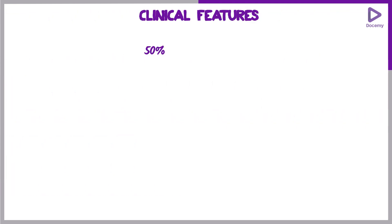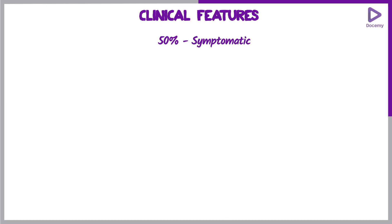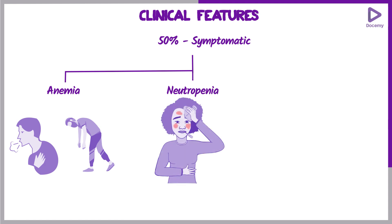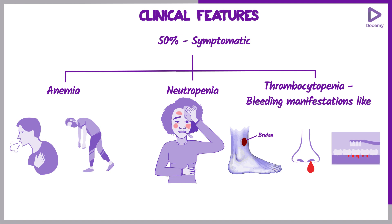Regarding clinical features, 50% of patients will be asymptomatic, presenting with an abnormal blood report without any symptoms. The other 50% will have symptoms suggestive of cytopenias: if anemic, they present with shortness of breath and easy fatigability; if neutropenic, they present with various infections; if thrombocytopenic, they present with bleeding manifestations like bruising, epistaxis, or bleeding from the gums.